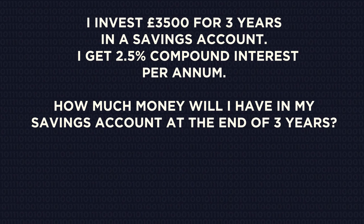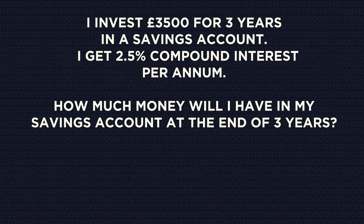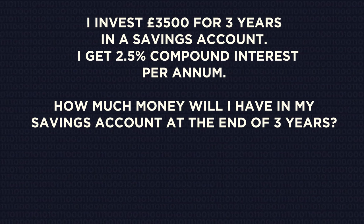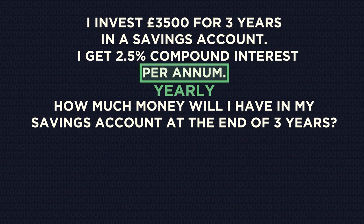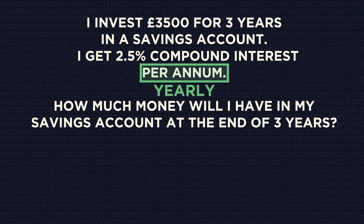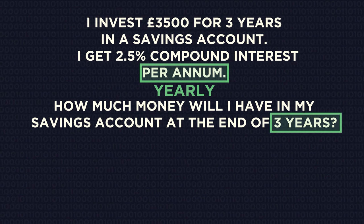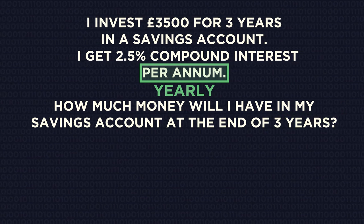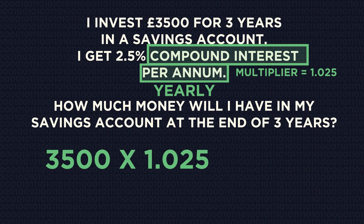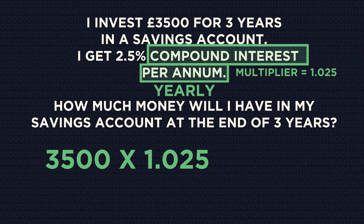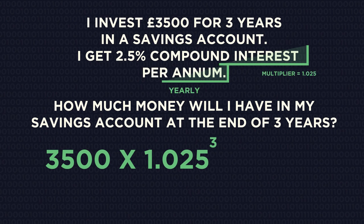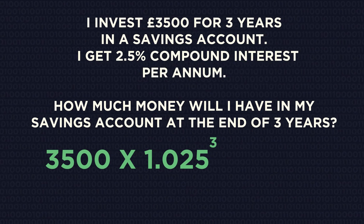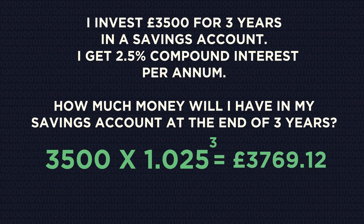Let's have a look at an example. It's compound interest per annum, which means yearly, over three years. It's a percentage increase, so the multiplier is 1.025, and three years means we raise it to the power of three. Simple really.